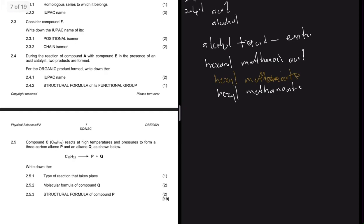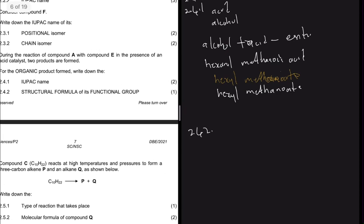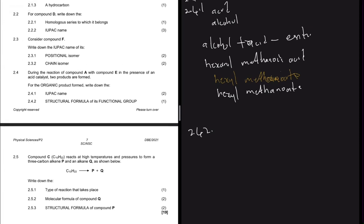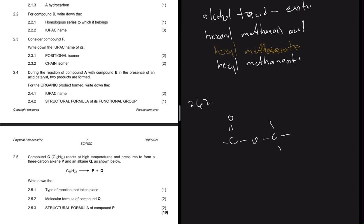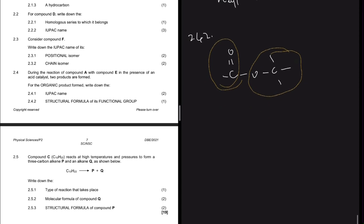For 2.4.2, write the structural formula of the functional group of an ester. You have a carbon with a double bond to oxygen, and then another oxygen bonded to the carbon on the other side - that is the functional group of an ester. If you pay attention, one part comes from the alcohol and the other part comes from the acid.